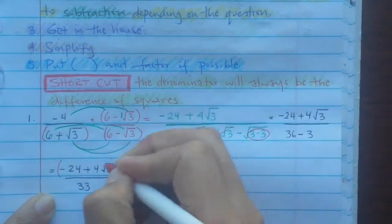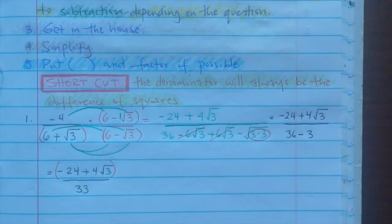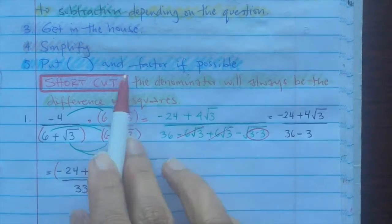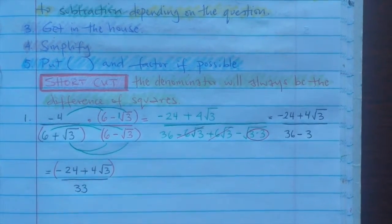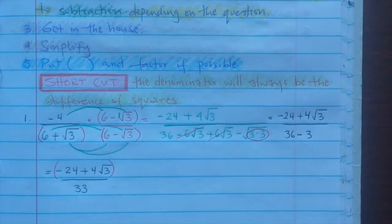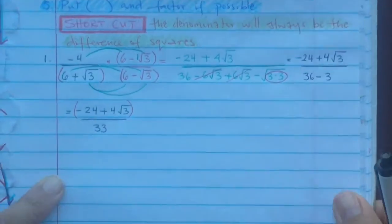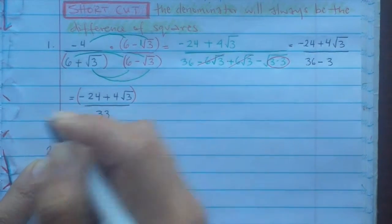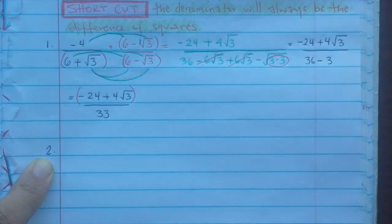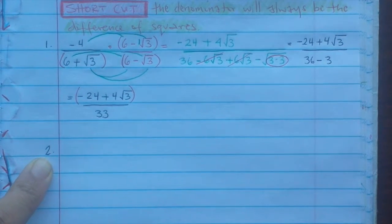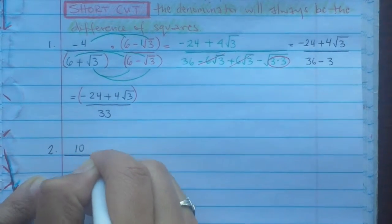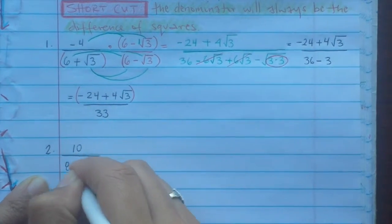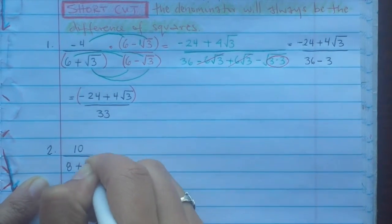Combine the denominators: 36 minus 3 gives you negative 24 plus 4 radical 3 over 33. Now simplify — put parentheses and see if you can take out anything. I can take out a 4, but it's not going to cancel with that 33, so I'll just leave it. This is a listening check — shade in the 0 in that 10 only.